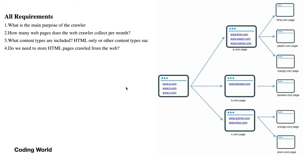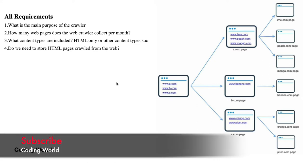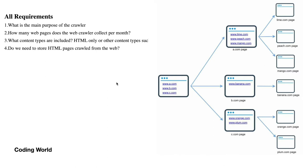Before starting the detailed system design, we have to establish our requirements. If you are in an interview, you have to ask all the possible clarifying questions. I have four key requirements to ask. First, what is the main purpose of the crawler — are we feeding a search engine, doing data mining, or providing data to an analytics engine? We have to understand the purpose so we can design the crawler accordingly.